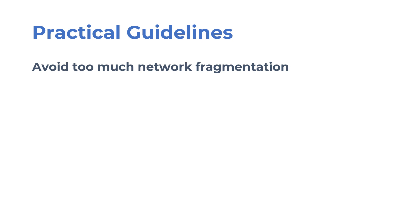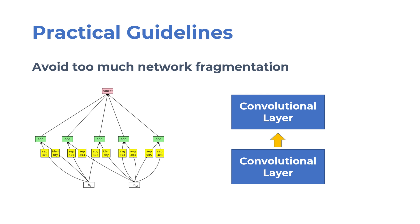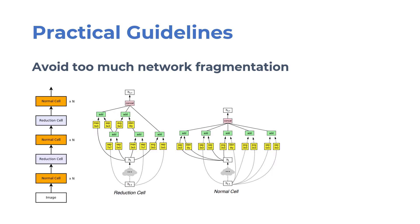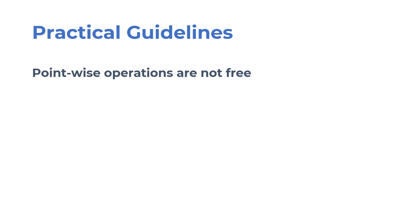Another guideline is that network fragmentation reduces the degree of parallelism. Using a lot of small operations instead of a few large ones decreases efficiency, since they are not very GPU friendly and they introduce extra overheads. This is a well known phenomenon and is one of the reasons why some automatically designed models run slower. Network architecture search algorithms may result in heavily fragmented architectures when accuracy and the number of operations are the only search criteria. The paper also points out that element-wise operations have a non-negligible cost. Point-wise operations such as ReLU and 1x1 convolutions have a smaller number of floating point operations, but their memory access cost is non-negligible, therefore one shouldn't consider them free in model architecture design.